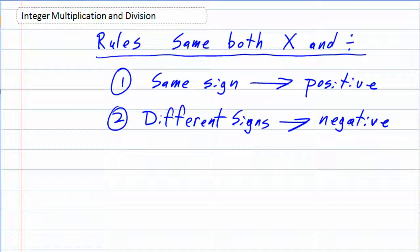So when the signs are the same, positive answer. When the signs are different, we're going to have a negative answer. So for example, if I were to take a positive 2 and multiply that with a negative 4, those signs are different.